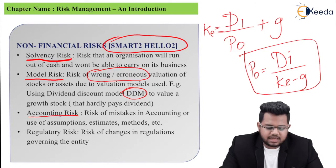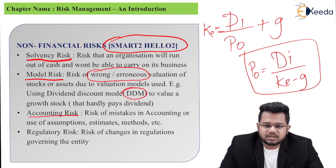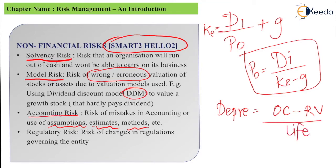A stands for accounting risk — the risk of mistakes in accounting, such as errors in journal entries or data entry, or the risk of using wrong assumptions, estimates, and methods. For example, in the depreciation formula DEPRI = (Original Cost − Residual Value) / Estimated Life, both the residual value and the estimated life are assumptions. If you make mistakes in those, that is accounting risk.